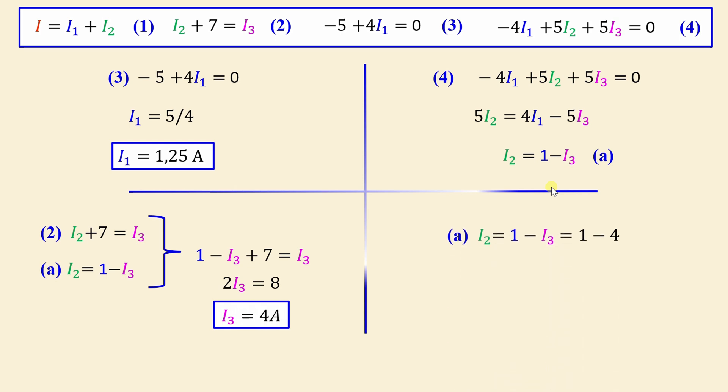We go back to equation A. We have I2 is 1 minus I3. We already found I3 is 4 amps. We obtain I2 negative 3 amps.